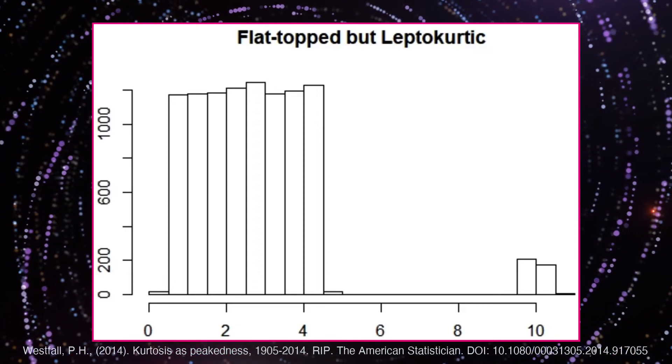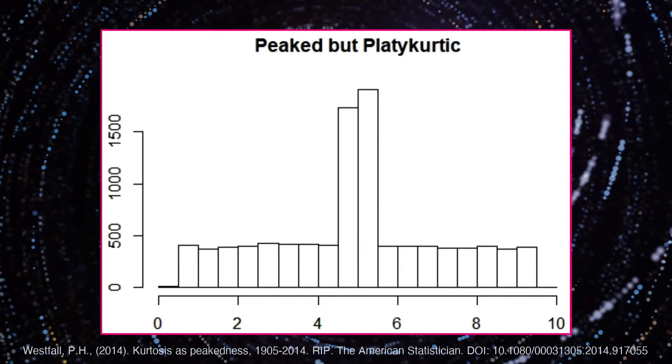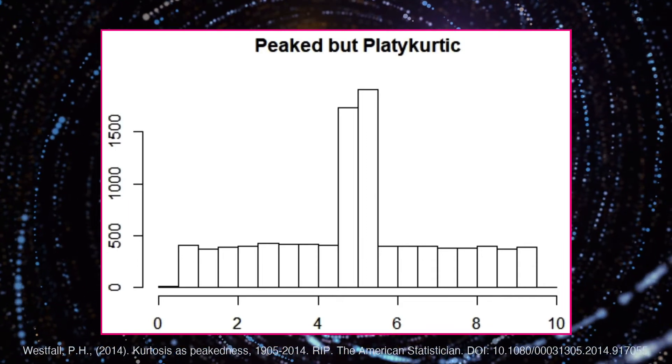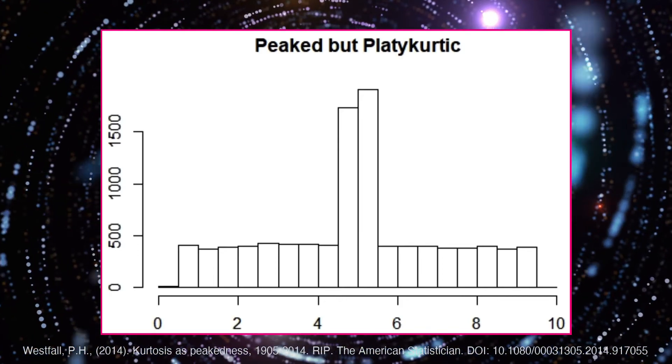Mathematically, the tails are narrow. And this is a platocurtic distribution, even though we would describe it as peaked. Mathematically, the tails are thick.